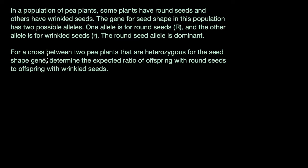For a cross between two pea plants that are heterozygous for the seed shape gene, determine the expected ratio of offspring with round seeds to offspring with wrinkled seeds. Pause this video and see if you can have a go at this by yourself before we do this together.